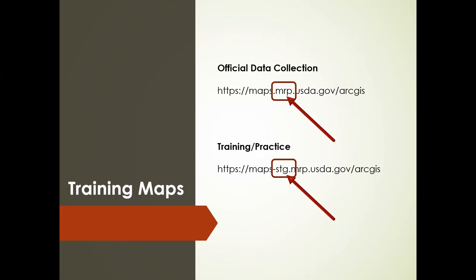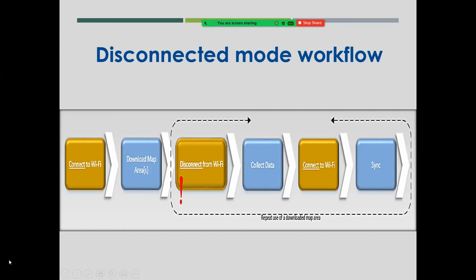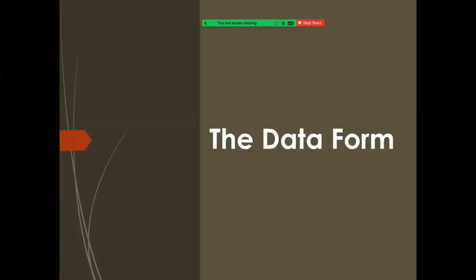That's actually a freebie question on the quiz — make sure you're in the right one. The disconnected mode workflow is probably familiar to many of you. The key takeaway is that the Field Maps application was specifically designed to operate in disconnected mode, meaning while not connected to Wi-Fi. This is excellent for those of us in rural areas. We collect data, come back to the office or a hotel, connect back to Wi-Fi, and synchronize our data back to the hosted map. We have to download a map area first, then disconnect and collect.